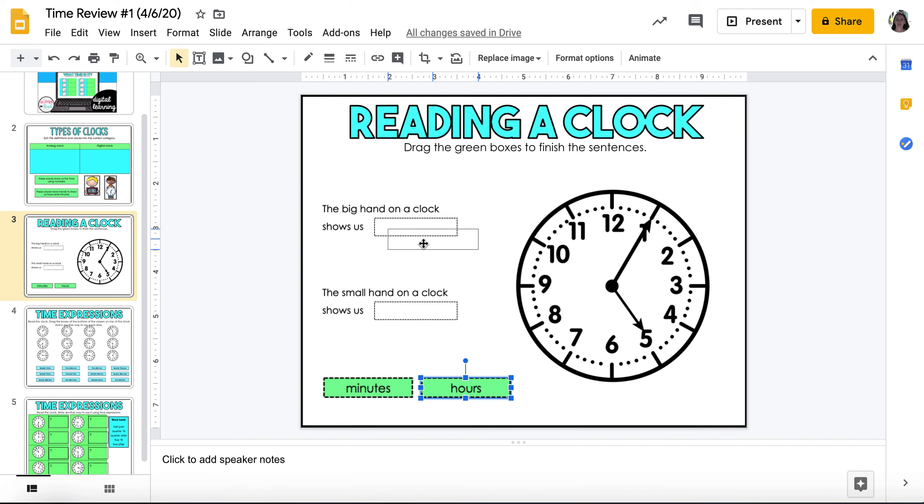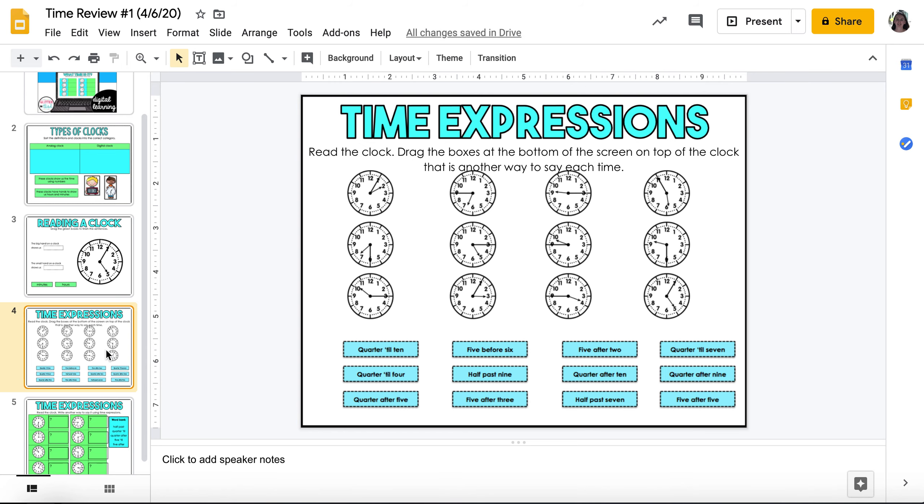For this slide, Reading the Clock, it says drag the green boxes to finish the sentence. So the big hand shows us hours, or does the big hand show us minutes? Click and drag and put the green box where it's supposed to go.